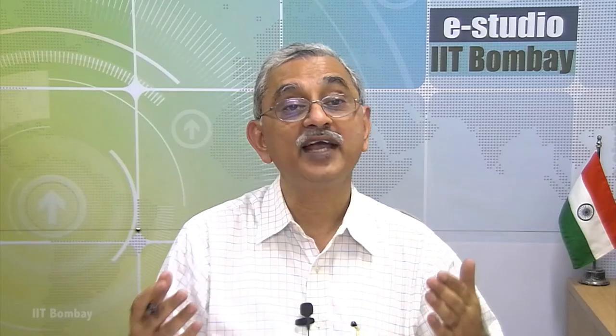And delta UA is related to its final temperature and initial temperature. Delta UB is related to its final temperature and initial temperature. Since the initial temperatures are the same, the final temperatures are also the same. We can write a simple expression for this.